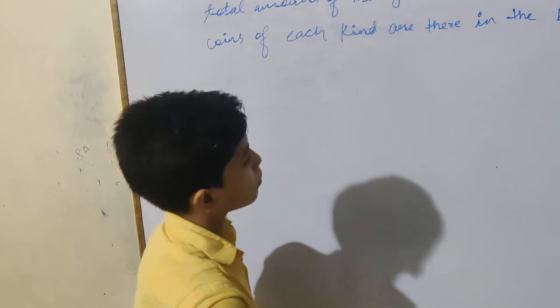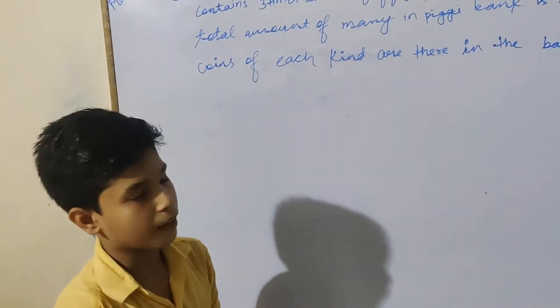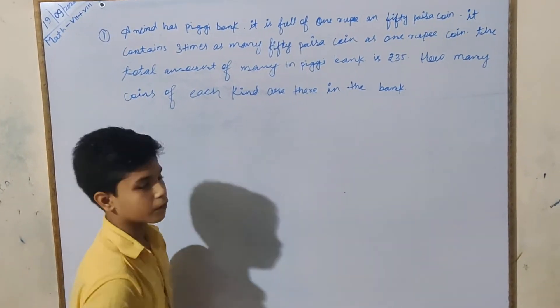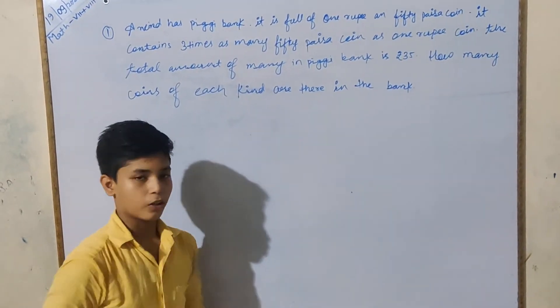How many coins of each kind are there in the bank? So, Arvind has a piggy bank with 1 rupee and 50 paisa coins, and it has 50 paisa coins 3 times the 1 rupee coins.